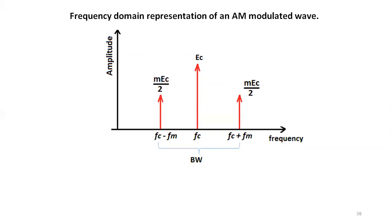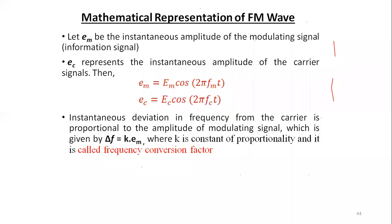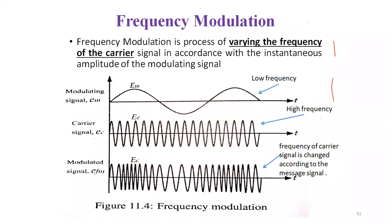The advantage of AM is that it can transmit over a very long range. This is due to ionospheric propagation — the AM signal is reflected by the ionosphere, allowing it to travel long distances up and down. That is why we can receive AM radio broadcasts over a very wide area.